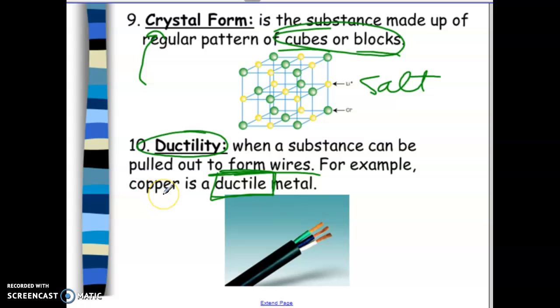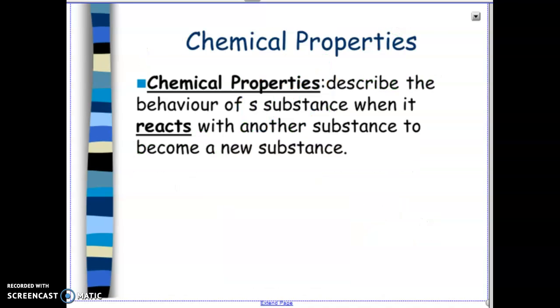So copper, for example, is one of the most commonly used metals for wires. So copper is definitely something that is ductile. If something cannot be formed into wires, we would say that it is not ductile.